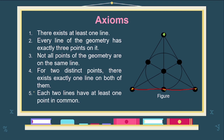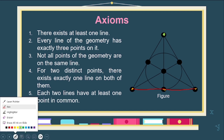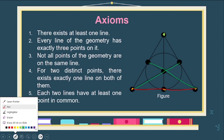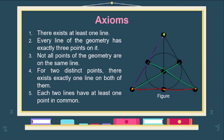For the fourth axiom — for two distinct points, there exists exactly one line on both of them — let's figure it out. This satisfies axiom four in the Fano plane. And for the fifth axiom — each two lines have at least one point in common — let's figure it out. Two lines have at least one common point; this is the common point, or intersection, of the two lines.